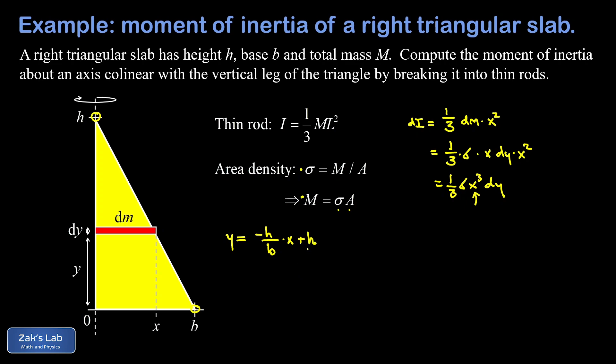Now we can solve for x in terms of y, in other words the width of the thin rod in terms of its vertical location. We subtract h from both sides and then multiply by negative b over h, and we get that x is negative b over h times the quantity (y minus h).